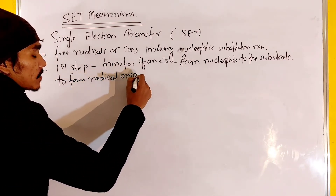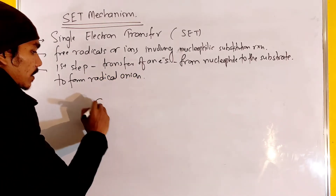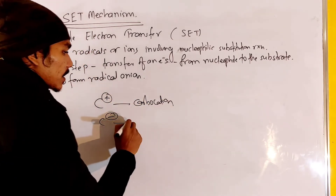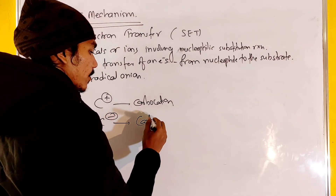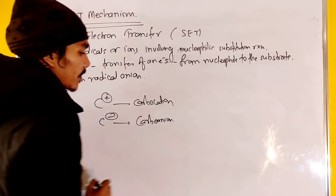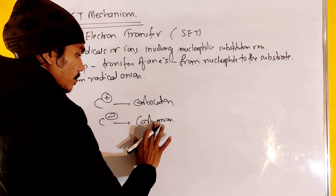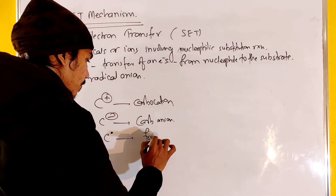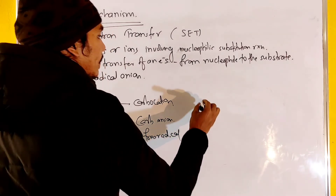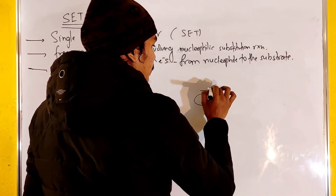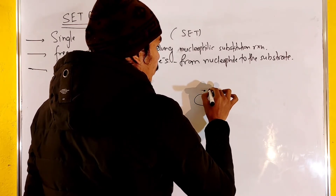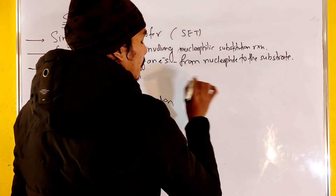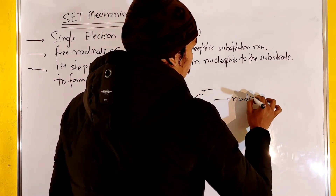The radical anion — we can see which is formed in the first step: carbon radical species. Carbon and a radical. So this is the single charge of carbon as a free radical. This is the free radical, this is the radical anion.